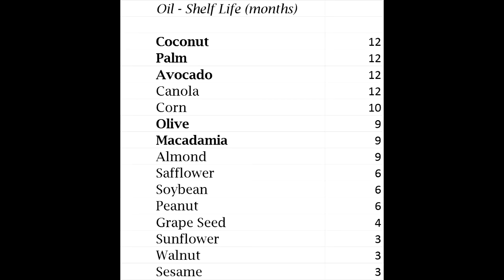The next thing I look at is the shelf life of these oils — if you let them sit on your shelf, will they become oxidized just by sitting there? At the bottom, walnut oil and sesame oil generally go bad in three months, so odds are if you buy these at the store, they're already bad. Olive and macadamia are around nine months. Coconut, palm, and avocado oil are generally the most shelf-stable. When buying olive oil especially, you want the nearest harvest date — if it was harvested several years ago, it's probably already bad.